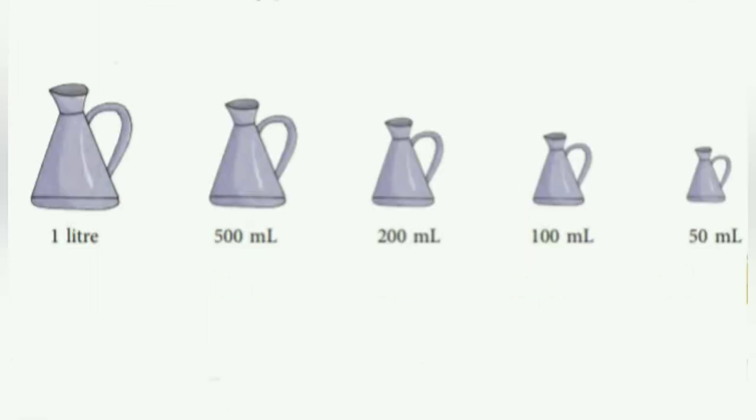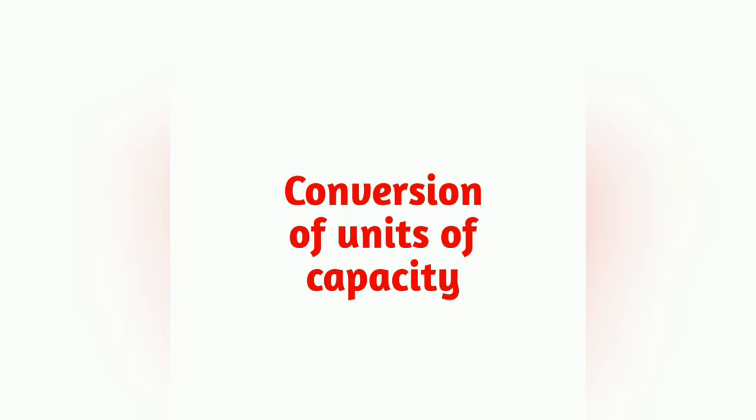These are used for measuring petrol or oil: 1 liter, 500 milliliters, 200 milliliters, 100 milliliters, and so on. So small amounts we measure in milliliters and large in liters. Let's see how to convert units of capacity.